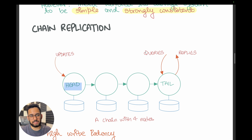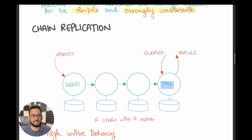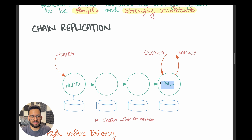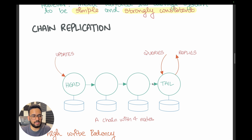Whenever you want to read, reads always happen on the tail. Whatever data the tail returns is guaranteed to have been persisted to every other node in the distributed system, because of how data is propagated through the chain. If some data is available at the tail, it is guaranteed to be present in every other node — therefore, it is strongly consistent.